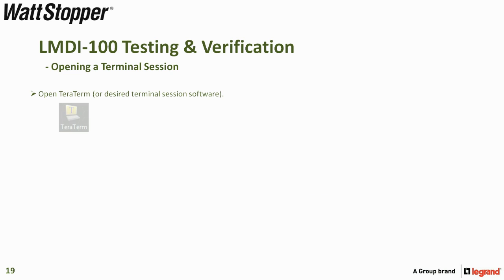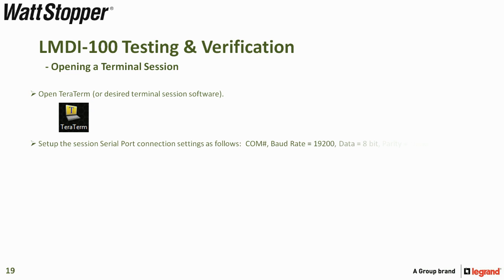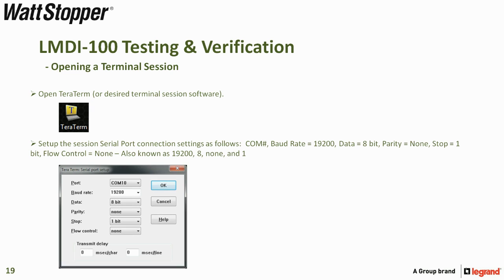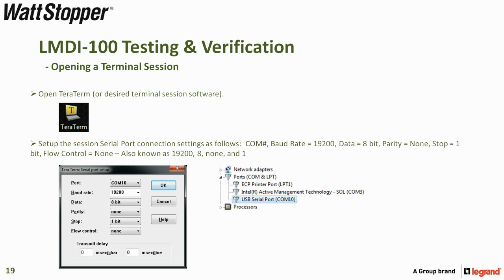Open TeraTerm or your desired terminal session software. Set up the session serial port connection settings as follows: your COM port, baud rate at 19200, data bits 8, parity none, stop bits 1, and flow control none.